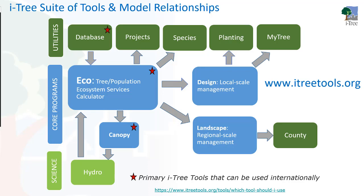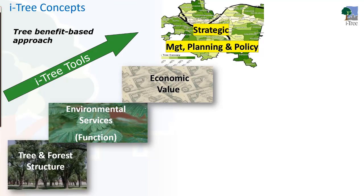We use the term 'tree benefit-based approach' when talking about iTree, and it starts with tree and forest structure — tree species, canopy cover, leaf area, and how trees are distributed across the landscape. That foundational information is used in the model to estimate the functions that the forest or tree structure is providing. Other models then attach economic values to those services. By understanding the benefits the resource provides, we can be more strategic in our management, planning, and policy efforts.